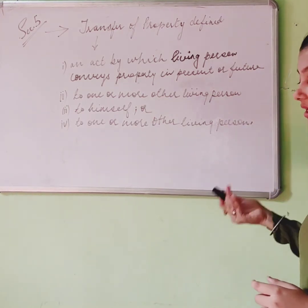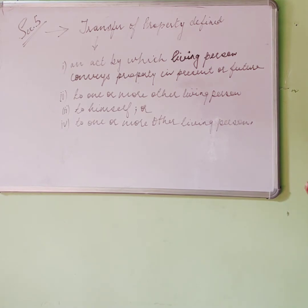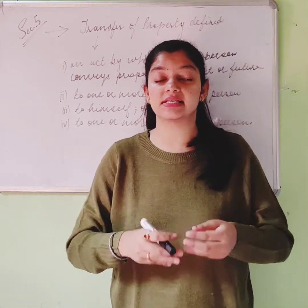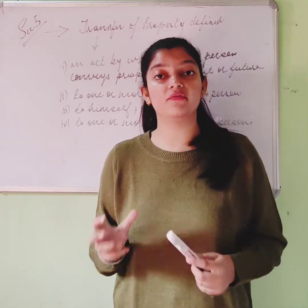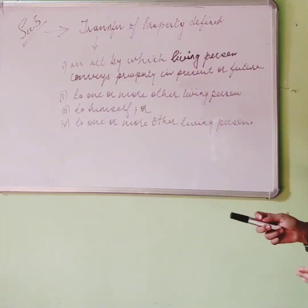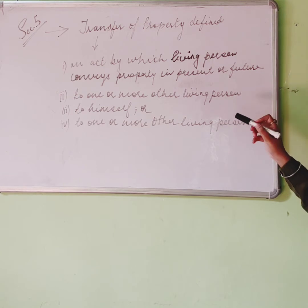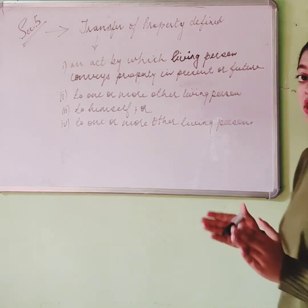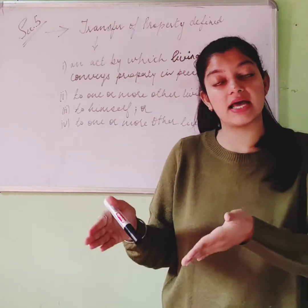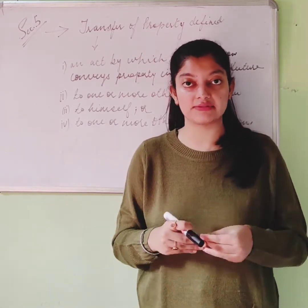The second ingredient is 'to one or more other living persons.' Living persons include not only individual human beings but also companies, associations, and bodies of individuals whether incorporated or not. If a company is a transferee, it is still a valid transfer under the Transfer of Property Act. Importantly, both the transferor and the transferee must be alive at the time of the transfer — neither of them should be dead at that point.